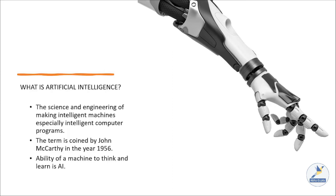Today everyone is talking about smart devices, smart cities, AI-enabled gadgets, robots, and many more things. So what exactly is artificial intelligence? Artificial intelligence is a term coined by John McCarthy in the year 1956 as the science and engineering of making intelligent machines, especially intelligent computer programs. Feeding them with data and making them think intelligently and act as humans is what AI is all about.